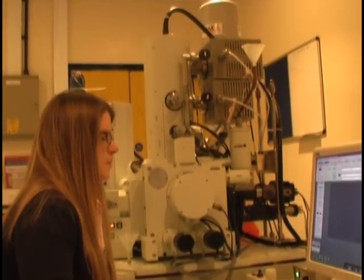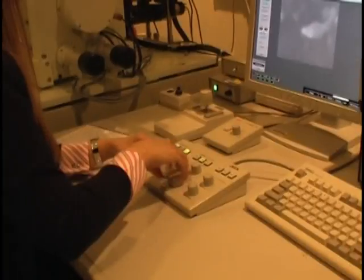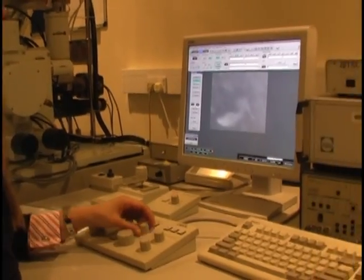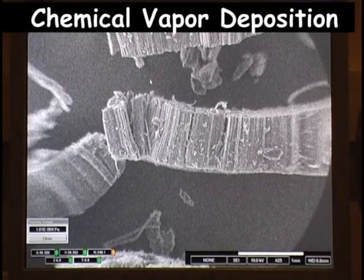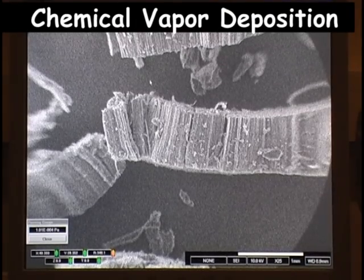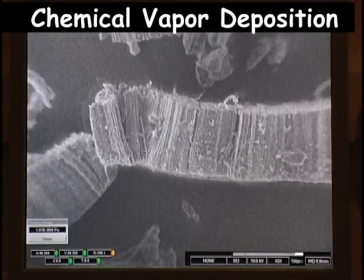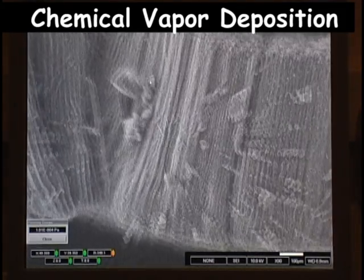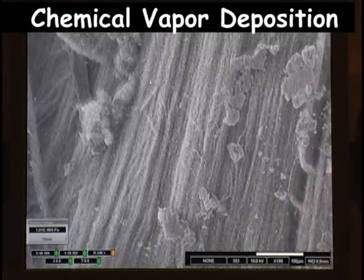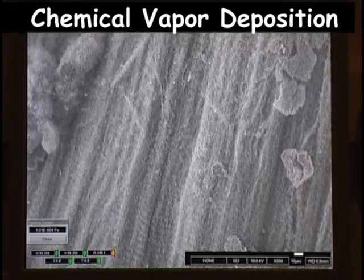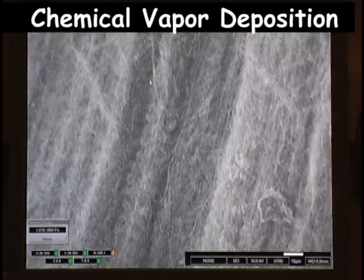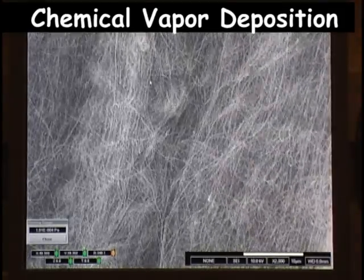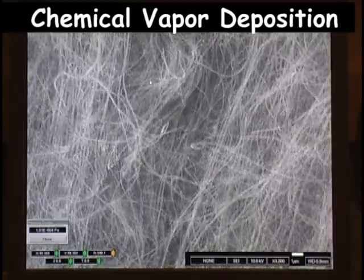We need to set up the SEM, but with someone as experienced as Nicole this doesn't take long. This is the CVD sample at a lower magnification, but let's go to the highest possible magnification of the SEM. Now we can see the individual tubes.